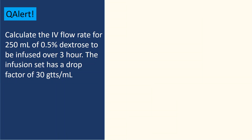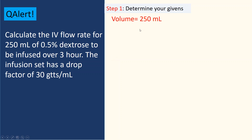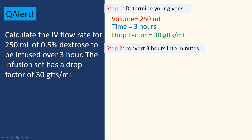Let's take a best example: calculate the IV flow rate for 250 mLs of 5% dextrose to be infused over three hours. The infusion set has a drop factor of 30 drops per mL. Step one: identify givens — volume is 250 mLs, time is 3 hours, and drop factor is 30 drops per mL. Step two: since time is in hours but calculation requires minutes, convert 3 hours to 180 minutes.